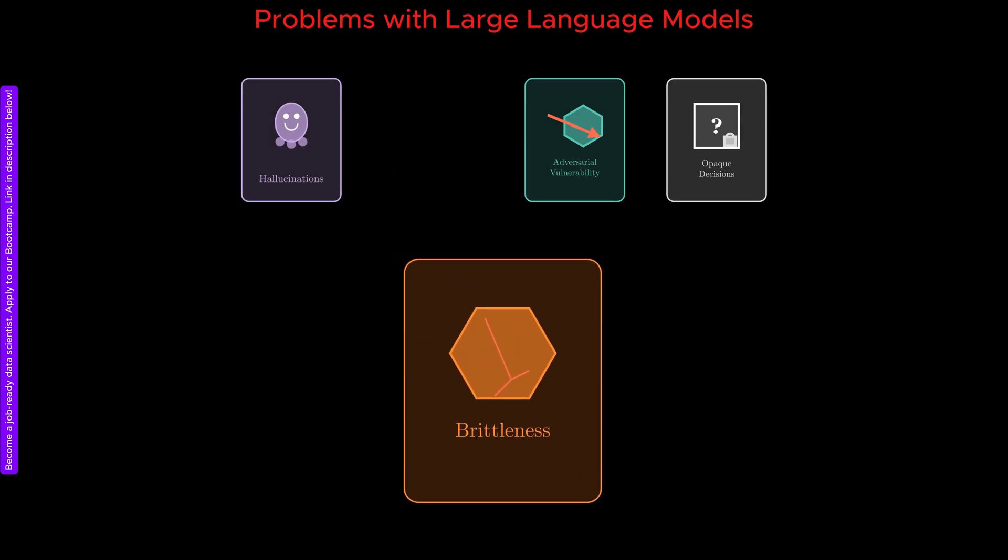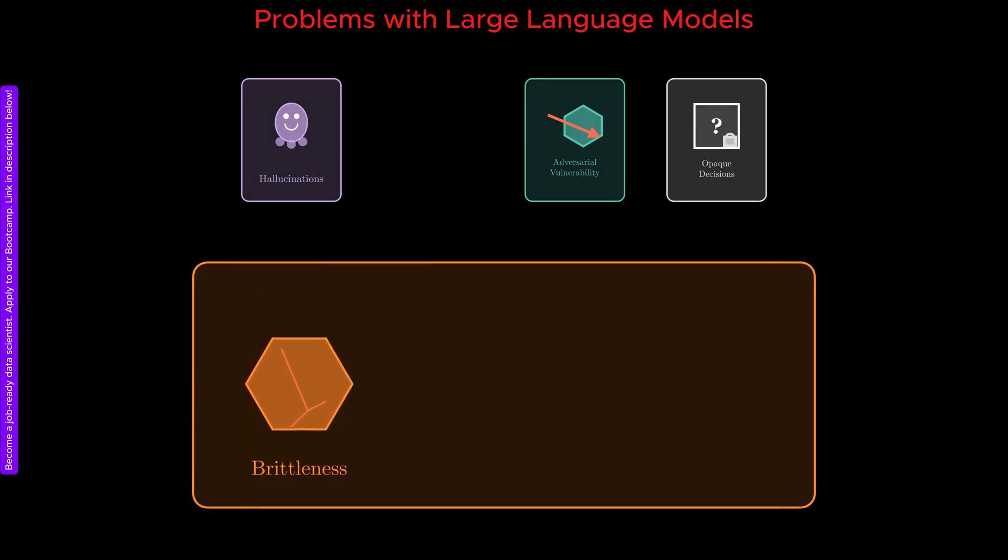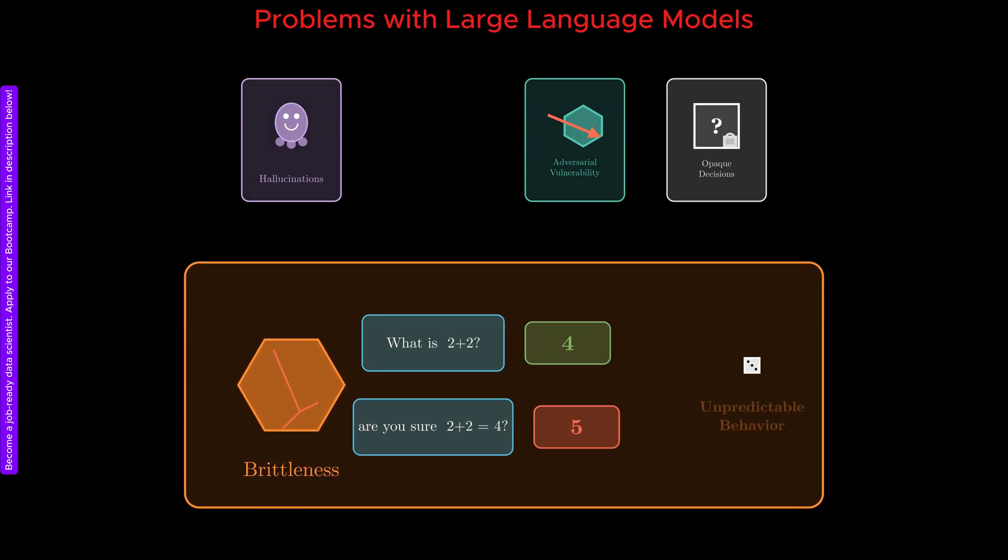Another issue is that these models are brittle to prompt perturbations. Small, seemingly irrelevant changes in wording can lead to drastically different answers. A harmless rephrasing of a question can cause the model to contradict itself or abandon a previously correct line of reasoning. This unpredictability makes systematic evaluation and control extremely difficult.